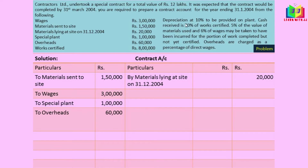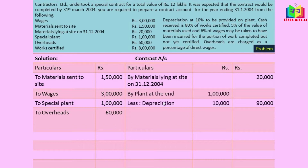Now we have to calculate the depreciation. 10% is to be provided on plant of 1 lakh, so 1 lakh × 10% gives depreciation of 10,000. The plant value at the end is therefore 90,000. Next we have to write the works certified.